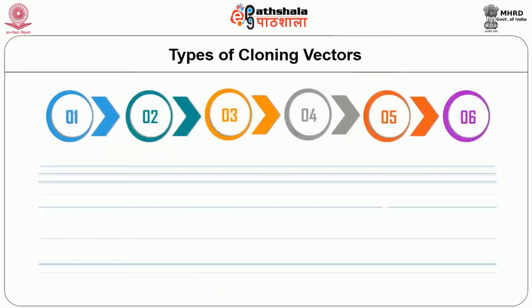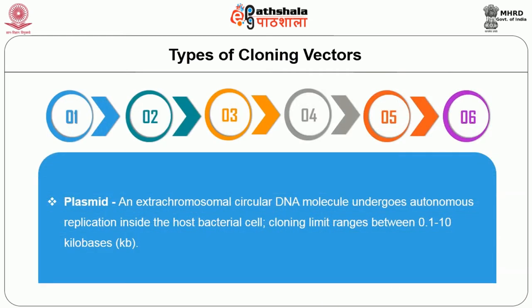Coming to the first vector: the plasmid. A plasmid is an extra-chromosomal circular DNA molecule that undergoes autonomous replication inside the host bacterial cell. It is used for cloning DNA in the size range of 0.1 to 10 kb.